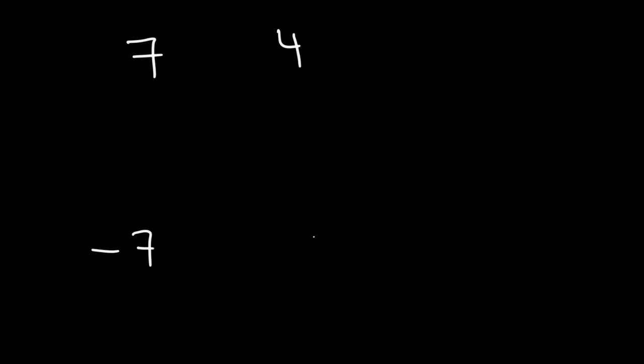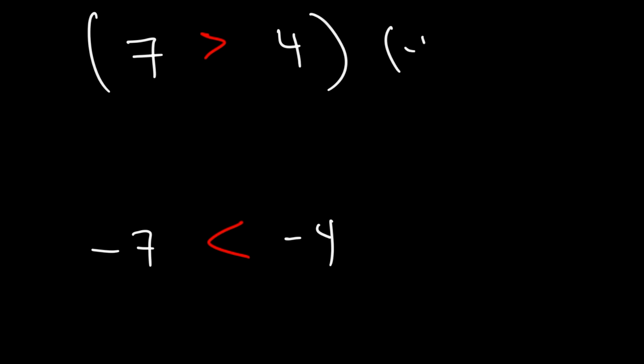What symbol goes between 7 and 4, and also between negative 7 and negative 4? We know that 7 is greater than 4, so we use the greater than symbol. That means negative 7 has to be less than negative 4, because all you do is multiply both sides by negative 1 and you get that expression — but you need to reverse the inequality.